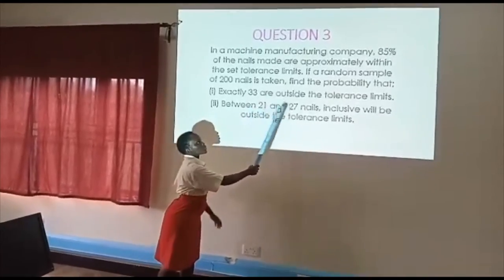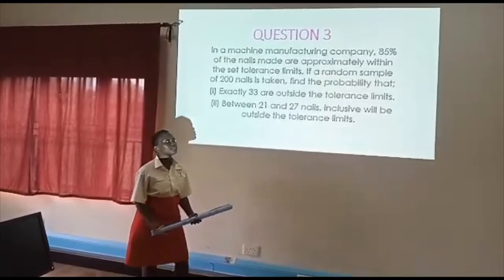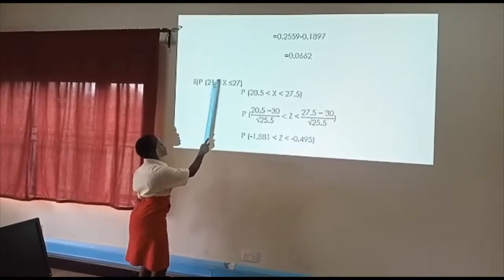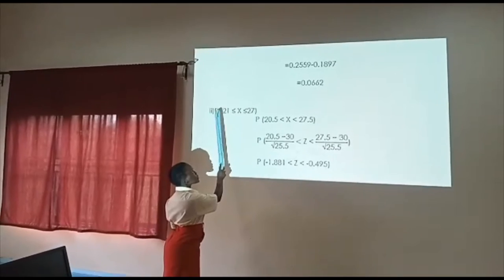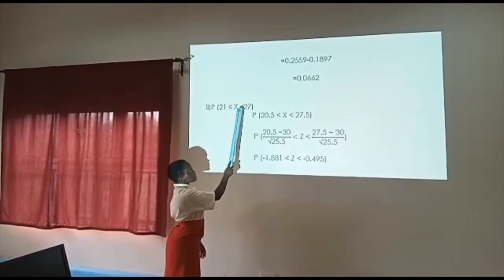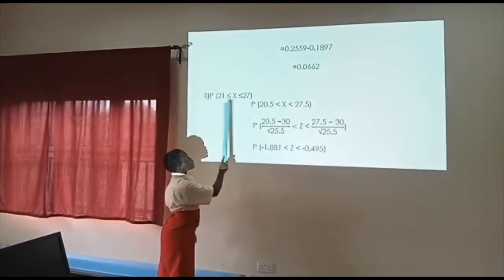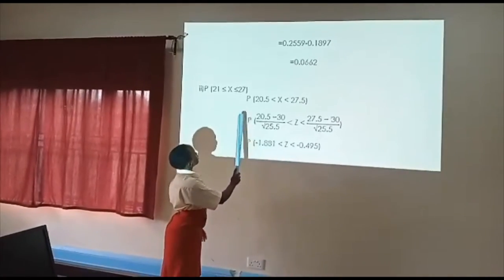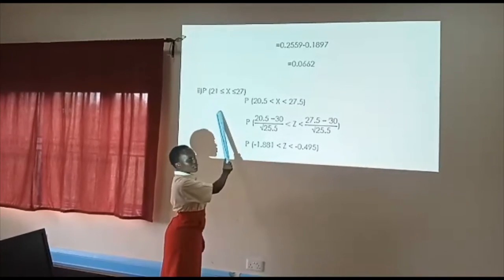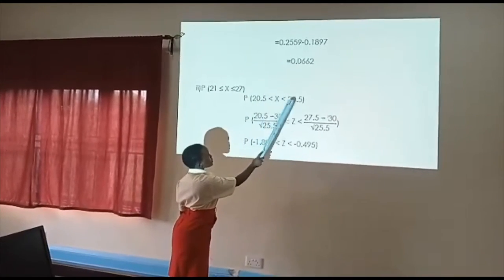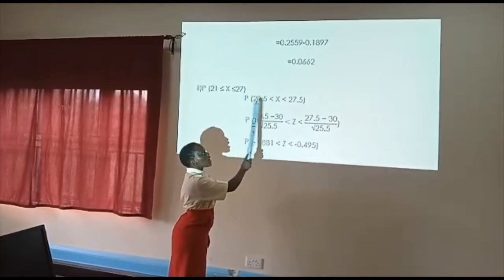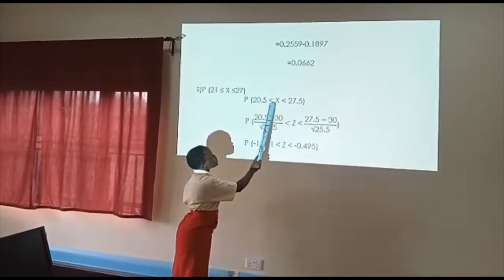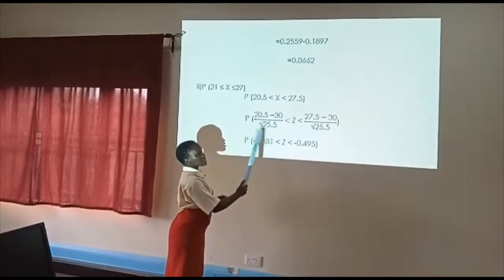However, both 21 and 27 should be included in our interval. So we want to include 21 and 27. When we write our statement, we write 21 less than or equal to X less than or equal to 27. However, we want to change this from discrete to continuous. Either add 0.5 or subtract 0.5. Because X is greater than 21, I am going to subtract 0.5. Because 27 is greater than X, I will add 0.5 to make it 27.5. As I change from discrete to continuous, I will have to get the equal sign because it is now becoming a continuous variable.